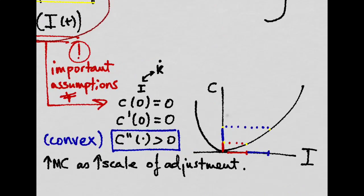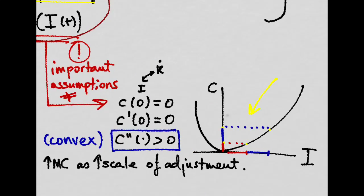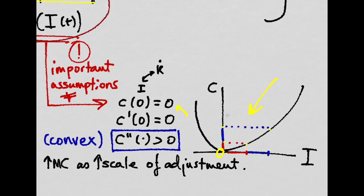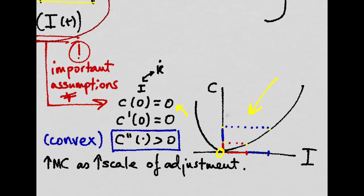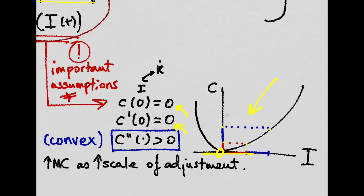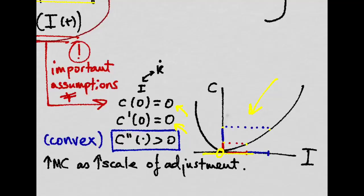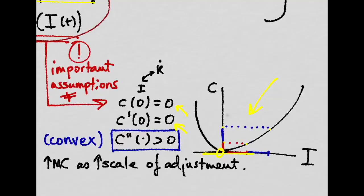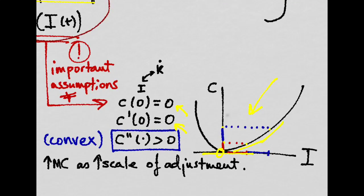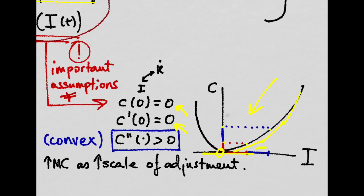You can think of it as something like this picture. When the firm doesn't invest, it has no costs at all, and the minimum cost is precisely at that point where the firm is not investing at all. Also, we're assuming that this cost function is a convex function. That is, the marginal cost is increasing as the scale of the adjustment increases.